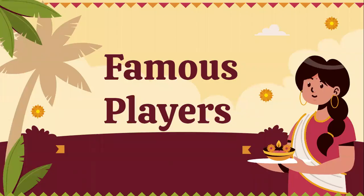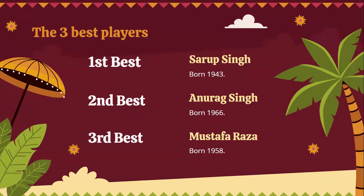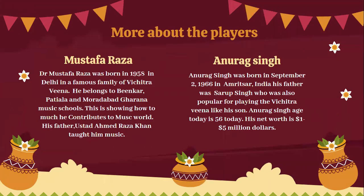Famous players: First, Sarup Singh. Second, Anurag Singh. Third, Mustafa Raza. Dr. Mustafa Raza was born in 1958 in Delhi, in a famous family of Vichitra Veena players. He belongs to Binkar Paishala and Muradabad Gharana music schools, showing how much he contributes to the music world.